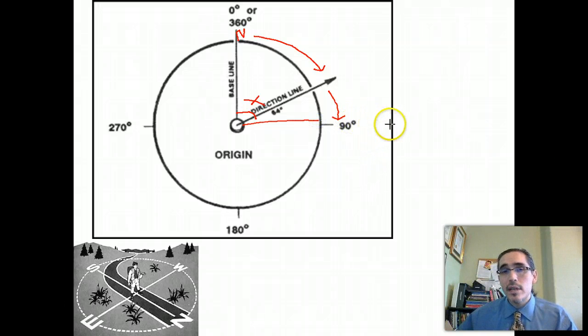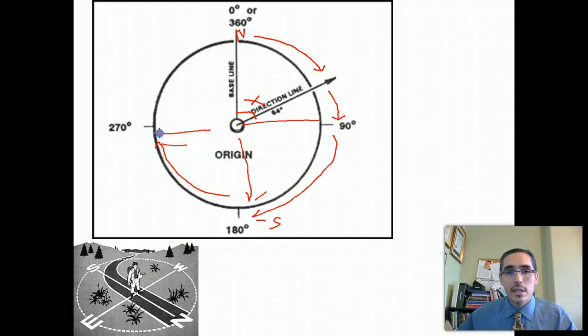And so east is 90 degrees, and that's the azimuth for east. If you continue to turn towards your right, the angle keeps increasing in size. Eventually, you're looking in the opposite direction from north, 180 degrees from north, which is south. If you keep turning towards your right in a clockwise direction, eventually you're going to face west, forming a 270-degree angle. So we'd say the azimuth for west is 270 degrees.